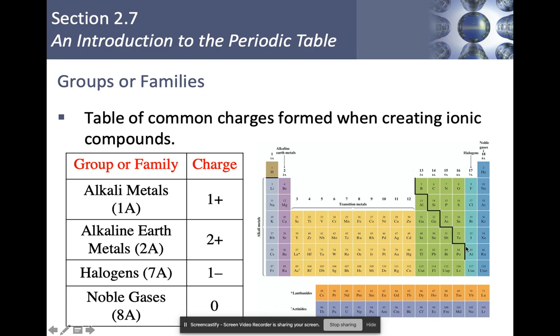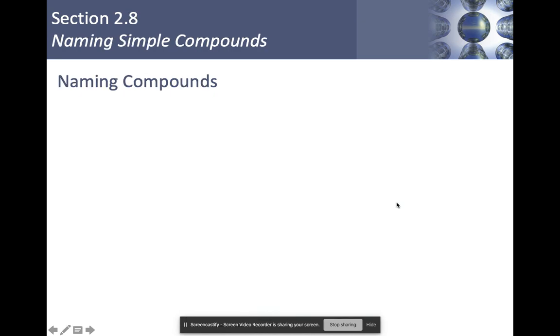This zigzag line is the separating device between metals on this side and non-metals on that side. There are way fewer non-metals than there are metals on the periodic table. The elements that are touching the line are going to be your metalloids, with one exception, which is aluminum.